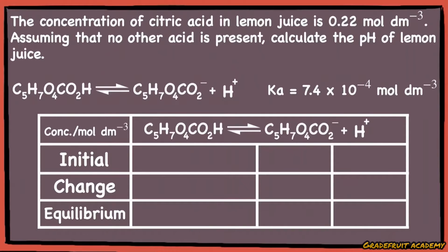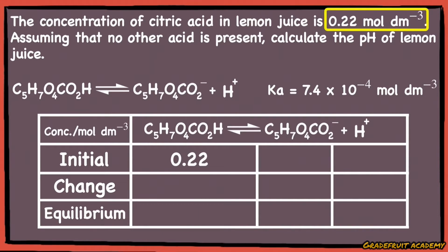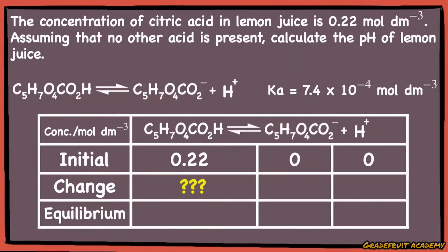What we need to do next is fill up the blanks in the table. Initially, before the citric acid molecule is ionized, its concentration is 0.22 mol per dm³ as stated in the question. The amount of these dissociated ions are both zero.